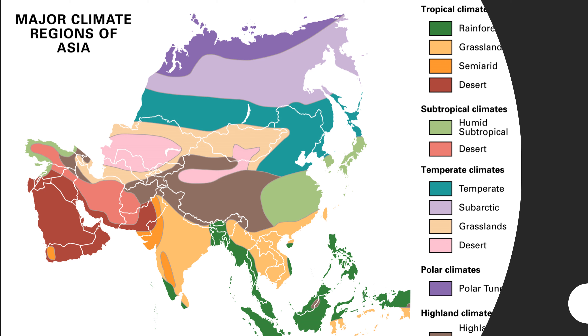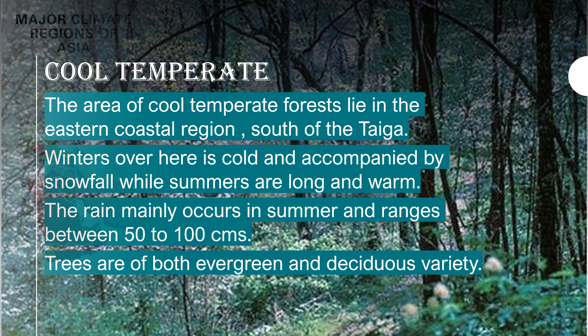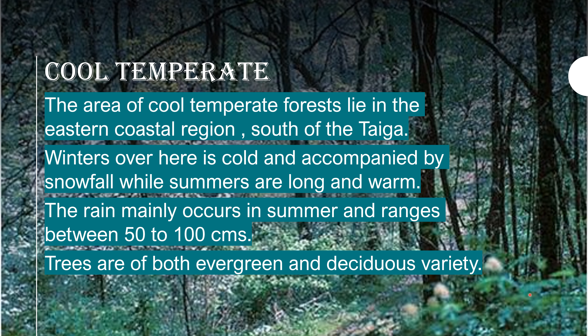In the eastern coastal region of Asia, south of the taiga belt, there is a region of cool temperate climate. The annual rainfall ranges between 50 to 100 centimeters and the rain occurs mostly during the summer.